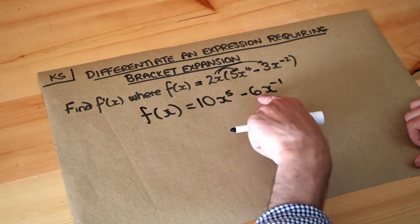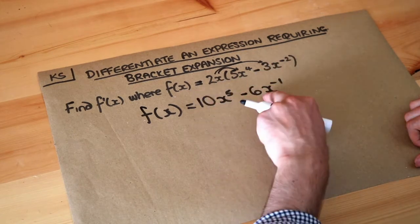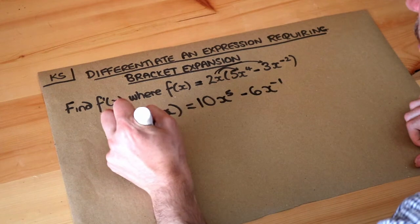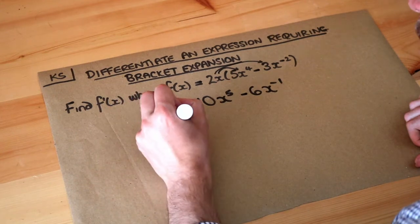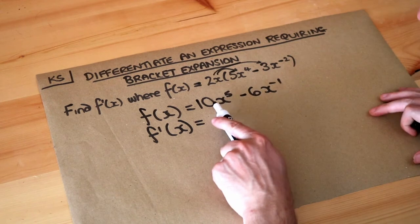Remember if you've got a subtraction or addition of terms and you want to differentiate them, you just differentiate each in turn. So we've got f'(x), the gradient function, and then remember we just multiply the number on the front by the index, the power of this x.